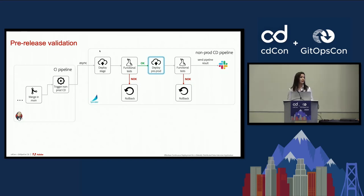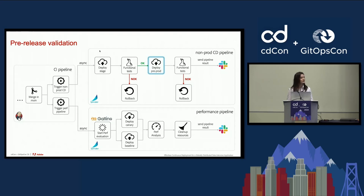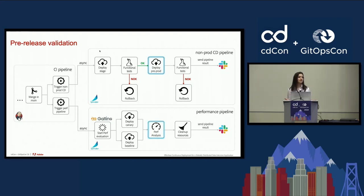While functional validation is crucial, non-functional validation is just as important. We evaluate the performance of each commit merged into the main branch by using Gatling to generate load and test different production-like scenarios. We deploy a new version — called canary — alongside a fixed version we know performs well, called baseline. Both pods receive the exact same traffic so we can analyze their metrics to see whether a performance regression was introduced. The metrics are compared automatically using automated canary analysis, which we'll explore in detail during the deep dive.